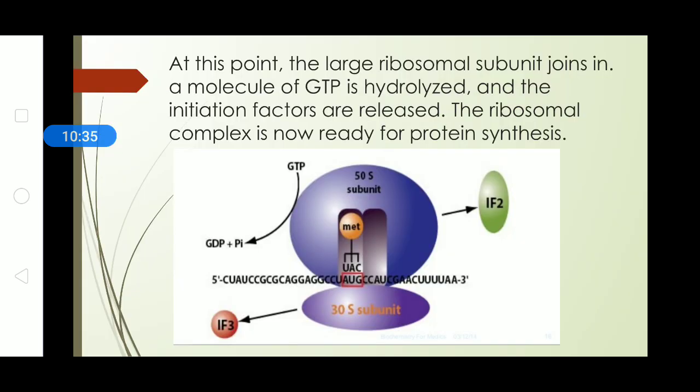Following this what happens, the 50S subunit or the bigger subunit of the ribosome comes and attaches just at the AUG or the initiation site and immediately at that point what happens is the initiation factor 2 and initiation factor 3 they are released because the process has now already started and there is no more need for them to adhere now, they are removed.